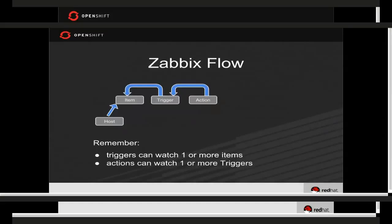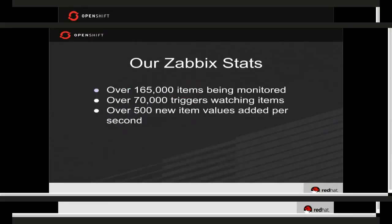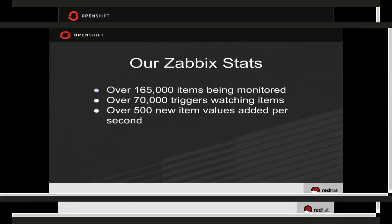Our Zabbix statistics: we currently have over 165,000 items monitored, over 70,000 triggers watching those items, and over 500 new item values added per second. We're not limited at that rate — people online have gotten Zabbix up to thousands per second. We know exactly what we need to do to scale higher and we're not even fully optimized yet.